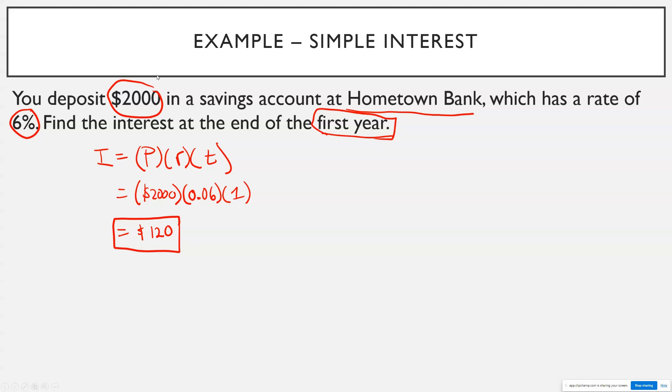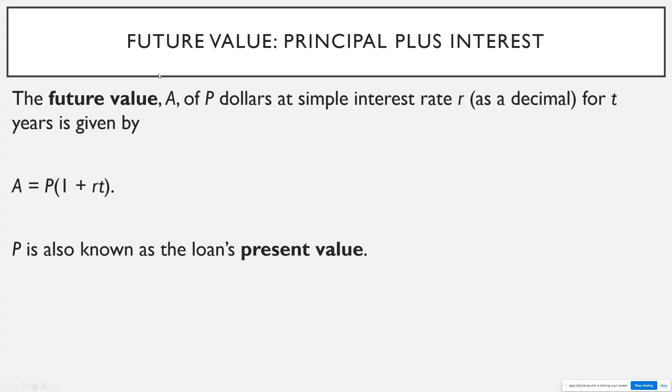Let's look at another problem here or another formula. The future value, so how much your money is worth in the future, and we're going to denote that as A, of P dollars. So I'm going to deposit P dollars at a simple interest rate R for T years is given by this: The future value is equal to P times 1 plus the rate times time. P can also be known as the present value, or think about it as the initial deposit, our initial principal.